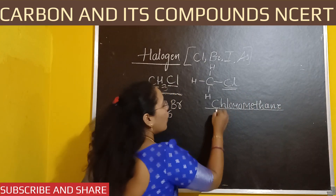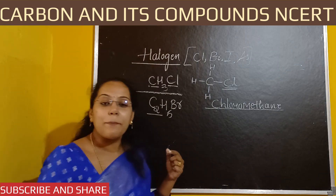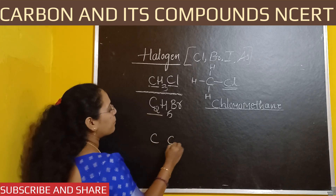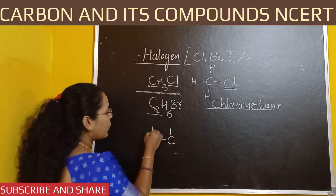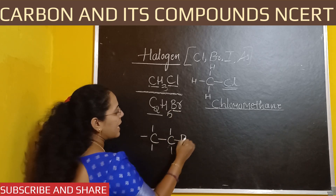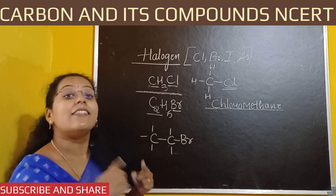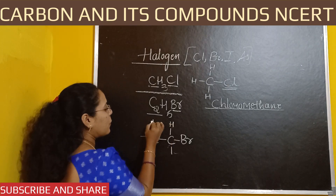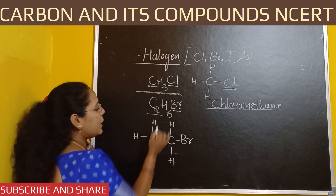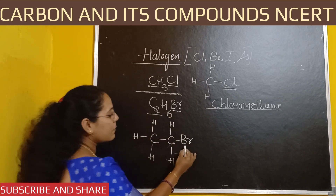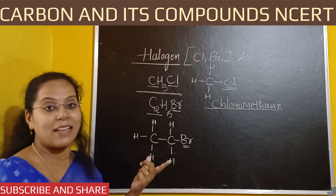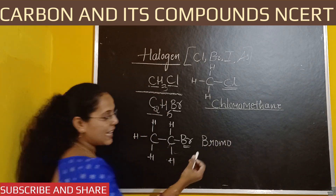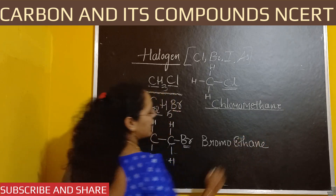Now let me write the IUPAC name for C2H5Br. The structure has 2 carbon and 5 hydrogen, and the halogen group is Br (bromine). The naming rule: chlorine → chloro, bromine → bromo, iodine → iodo. So for C2H5Br: bromine is bromo (prefix), and 2 carbon is ethane. Therefore the IUPAC name is bromoethane.